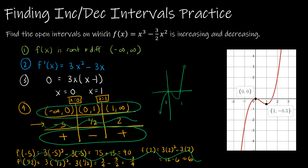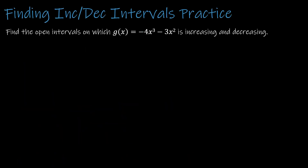Here's the real graph. It increases to x equals 0, where there's a zero-slope tangent line. Then it decreases down to x equals 1, where there's another zero-slope tangent line. Then it starts increasing again — matching our analysis exactly.